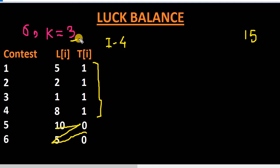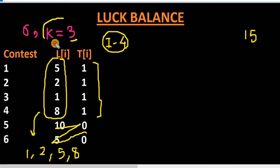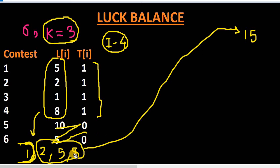One contest must be won by her. Instead of comparing each element, we sort the important contests by their luck value. The sorted values are 1, 2, 5, and 8. She needs to win 1 contest — that's the difference between the number of important contests and K. So we don't take the smallest value (1) and add the remaining values: 2, 5, and 8 are added to the luck balance because she can lose those contests. Adding 2 plus 5 plus 8 gives 15, and with the unimportant sum of 15, total is 30.